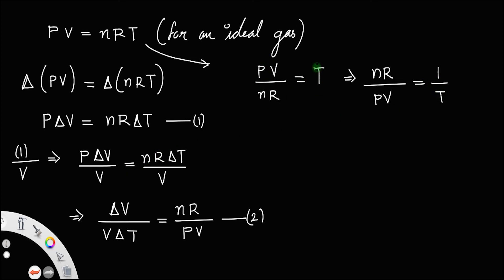Taking the reciprocal here, you also have to take the reciprocal on the right hand side also. So equation 2 will become, you know delta V by V delta T means the gamma or coefficient of cubical expansion, this nR by PV is actually 1 by T.